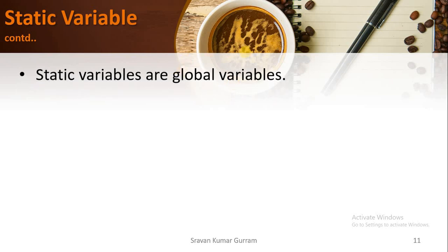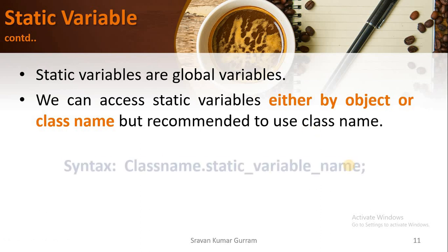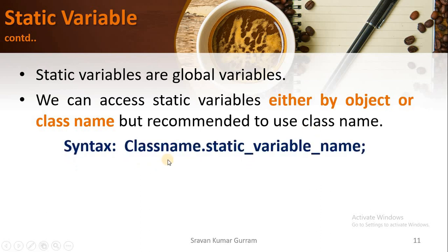Static variables are global variables. Local variables can only be accessed within the block in which they are created. But if you want to access a variable from any block in your program, you must create it as a global variable using the static keyword. We can access static variables either by object or by class name, but it is recommended to use the class name. The syntax is: ClassName.staticVariableName.